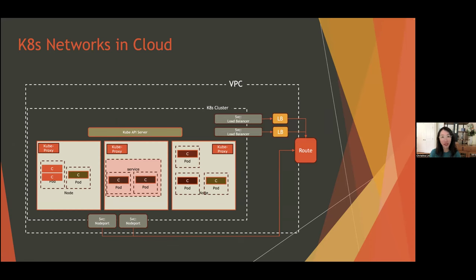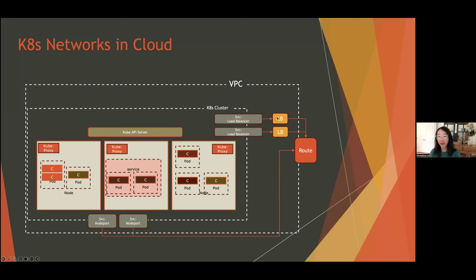In the cloud — taking AWS as an example, though GKE and AKS are similar — with node port, the external IP routes through the AWS routing to the EC2 instance and its assigned port, giving access to the service. With load balancer, every time you create a load balancer service, a cloud load balancer gets created and attached to routing. All traffic to that load balancer is forwarded into your Kubernetes cluster.